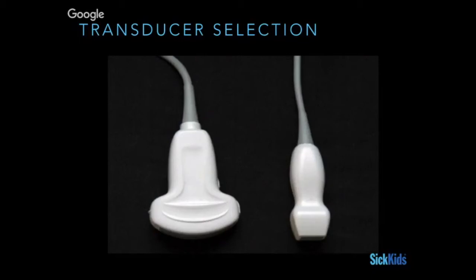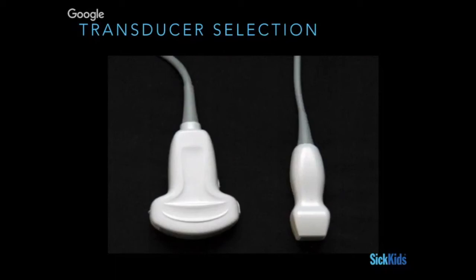By sending out information in different directions and interpreting them, the phased array allows you to see sharp angles you wouldn't otherwise see with a small footprint. There are some good YouTube videos that explain the basic physics — it's not super important clinically, but it is useful to understand why your probe works the way it does and what it actually means when we say phased array.